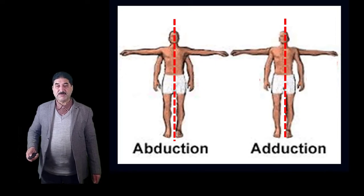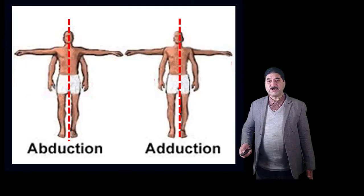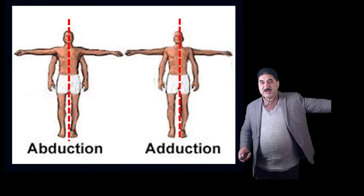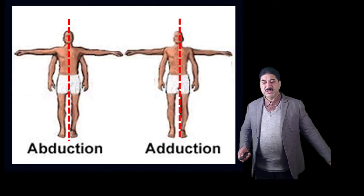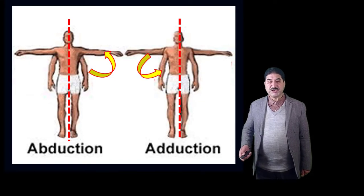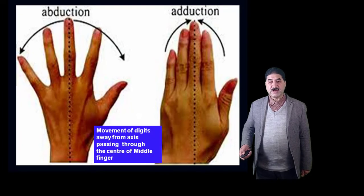Abduction is a movement where a limb moves away from the median plane. For example, abduction taking place at the shoulder joint — the limb moves away from the median plane. In adduction, the limb moves towards the median plane. During abduction the limb moves away from the median plane and during adduction the limb moves towards the median plane.